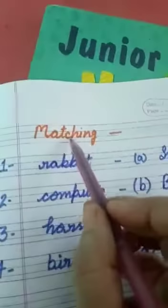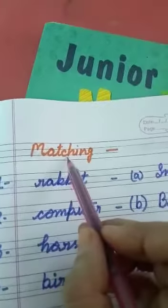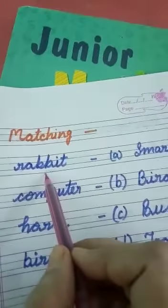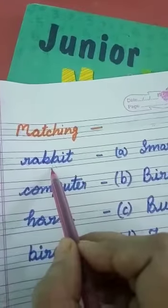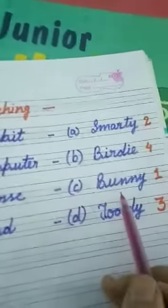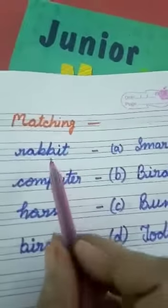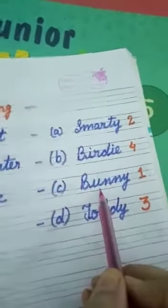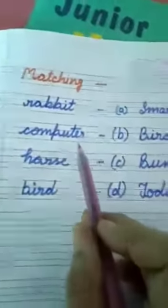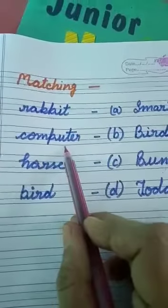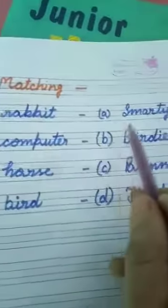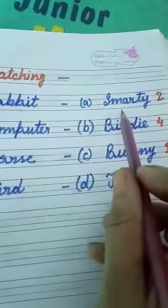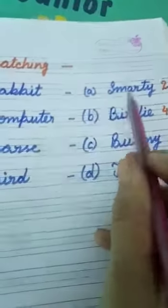Next we will do matching. First, rabbit — what is the name of rabbit? Bunny. So we will match rabbit with Bunny. Second, computer — computer's name is Smarty. So we will match computer with Smarty.